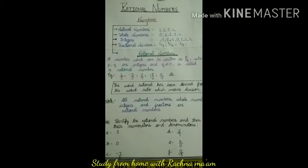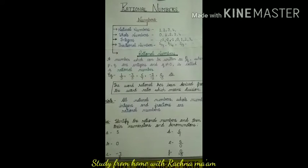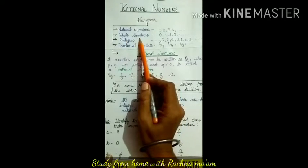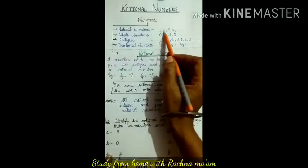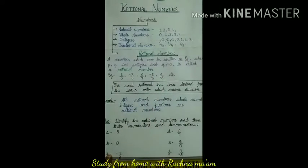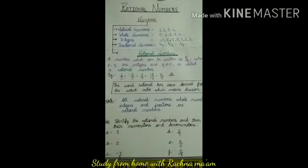But as we were studying counting numbers, when we moved to the next class, we found the need to extend them. So what did we find next? Whole numbers — that is, if we add zero to Natural Numbers, we call it Whole Numbers. The system of whole numbers starts from 0: 0, 1, 2, 3, 4, etc.